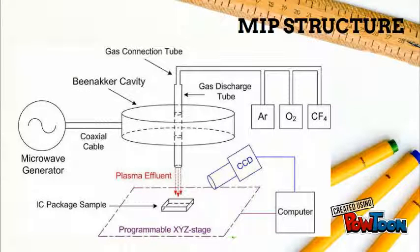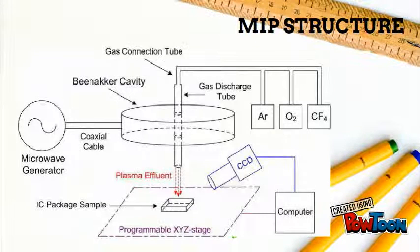The MIP structure consists of a microwave generator, a Beaker cavity, a gas discharge tube, three mass flow controllers, a CCD camera, a programmable XYZ stage, and a computer to control the components.